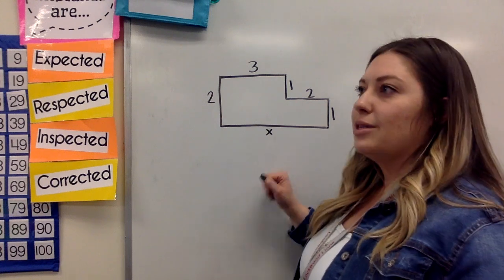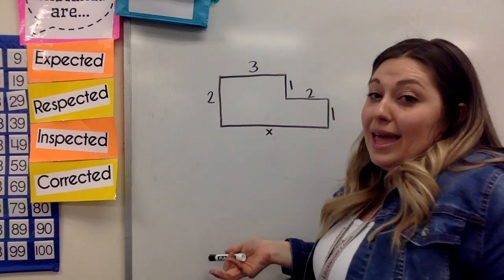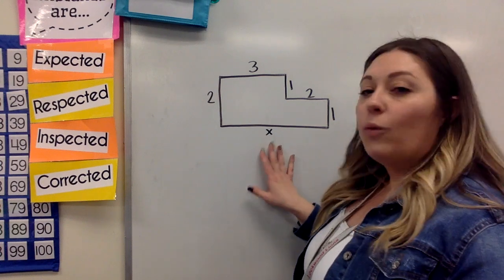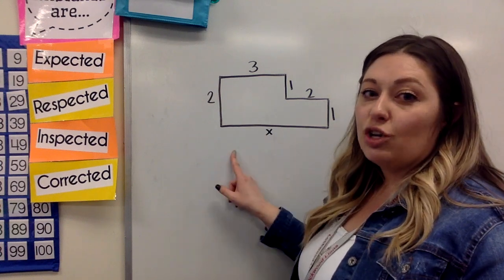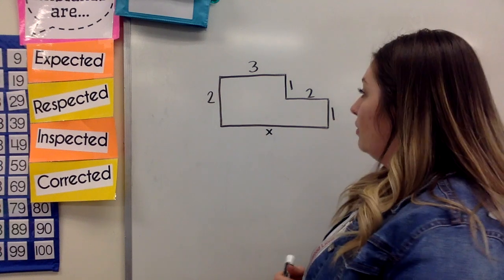You're not always going to see an X. Sometimes it'll be Y. Sometimes it'll be ABC. It doesn't matter what the letter is. It just shows you that it's not known, and you're going to figure out what that is.